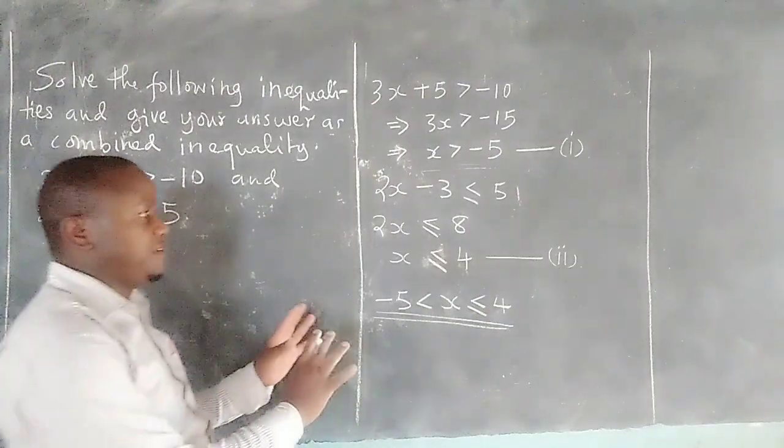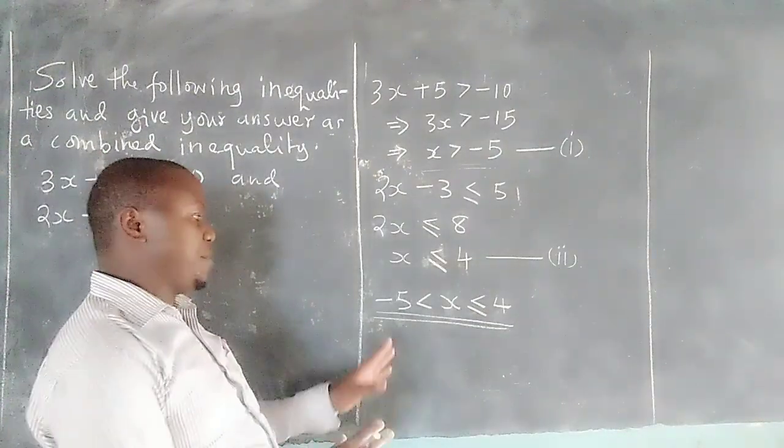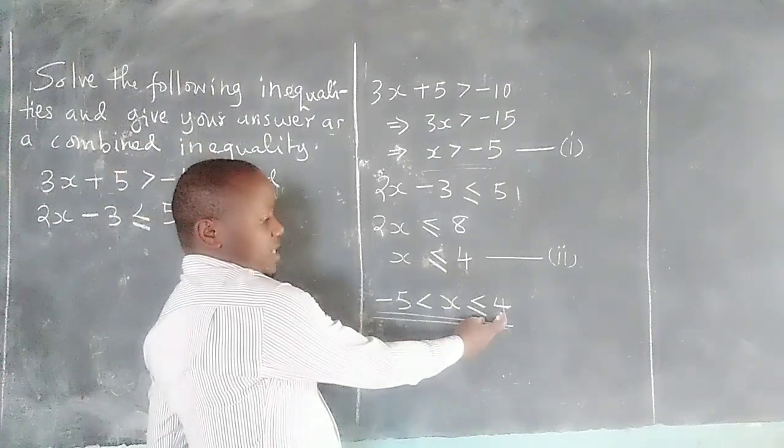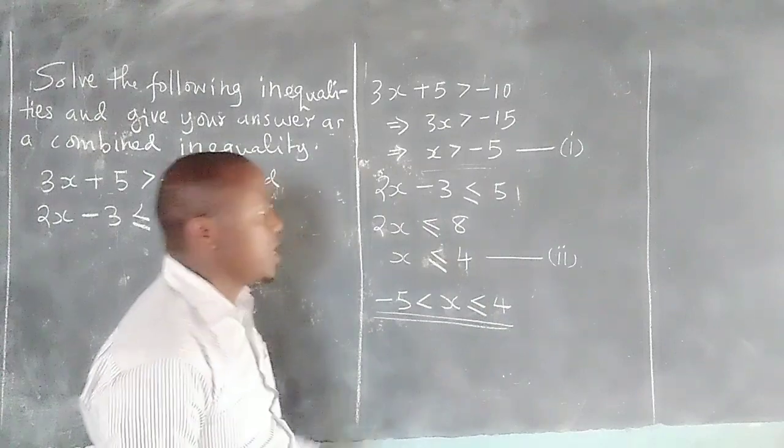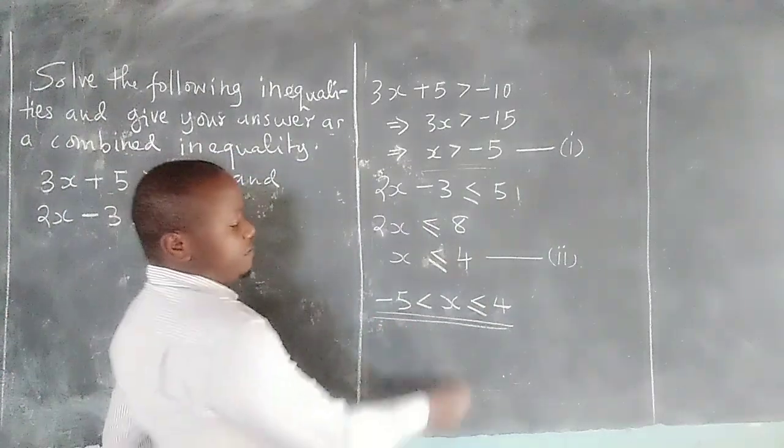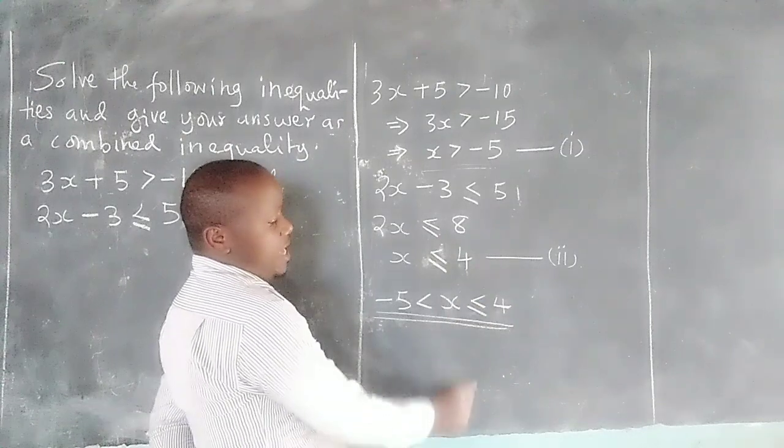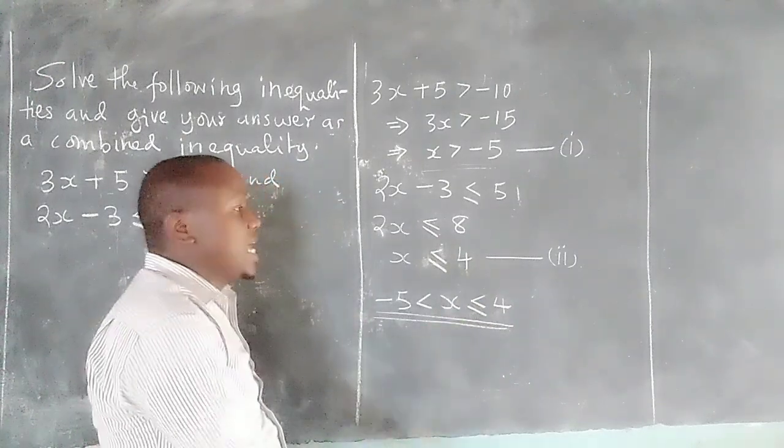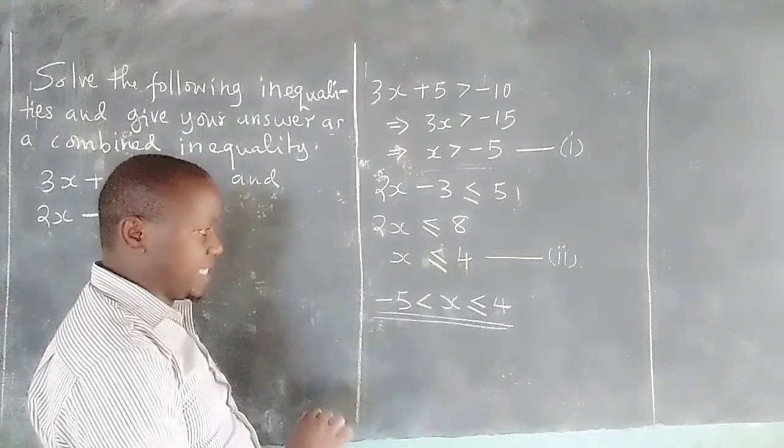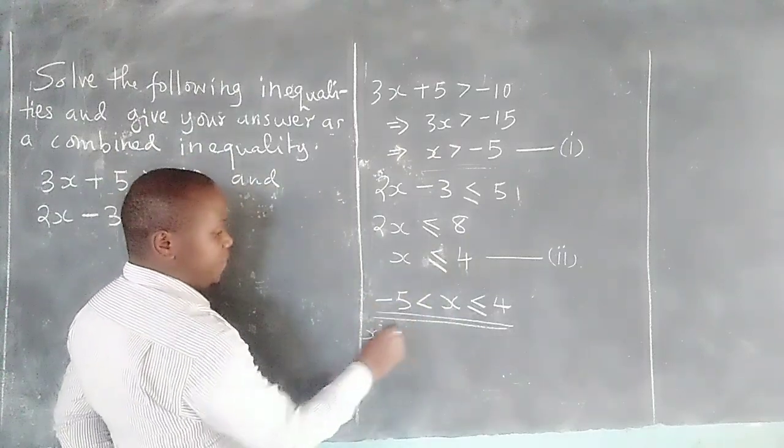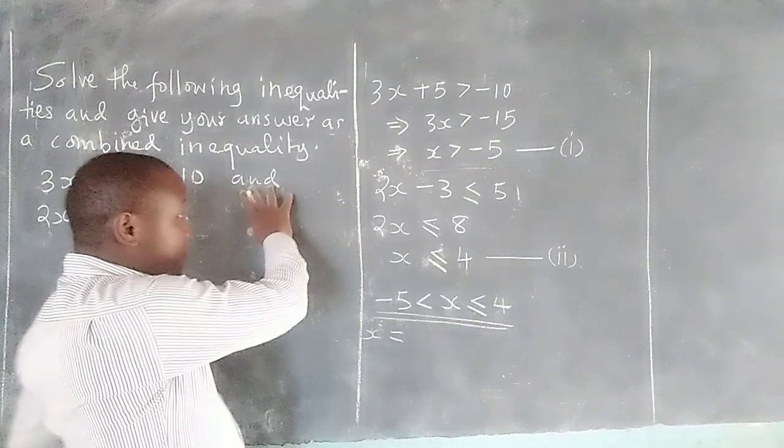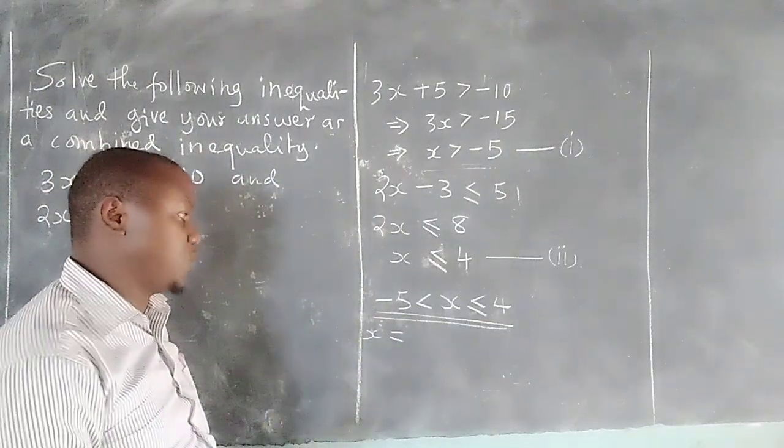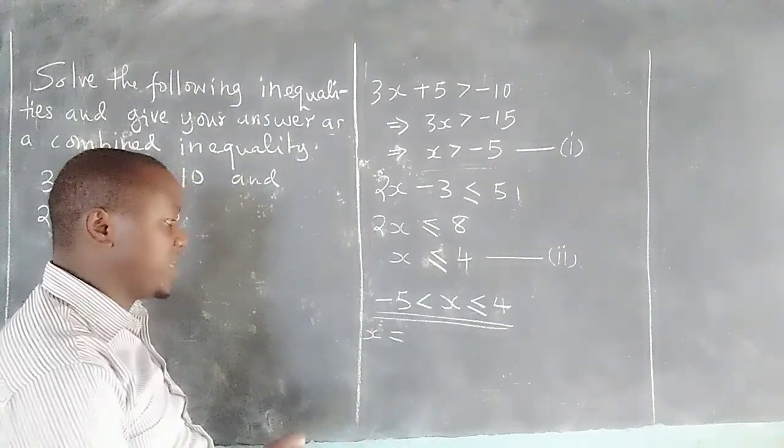A combined statement. We can just state the integral values which satisfy these inequalities. Therefore, because x ranges from -5 to and including 4, because in this inequality we have the symbol which means inclusivity, then we can say the values of x for these two inequalities—though we have not been told to state, but some other times the examiner will tell you to state the values or the integral values of x that satisfy the inequality.